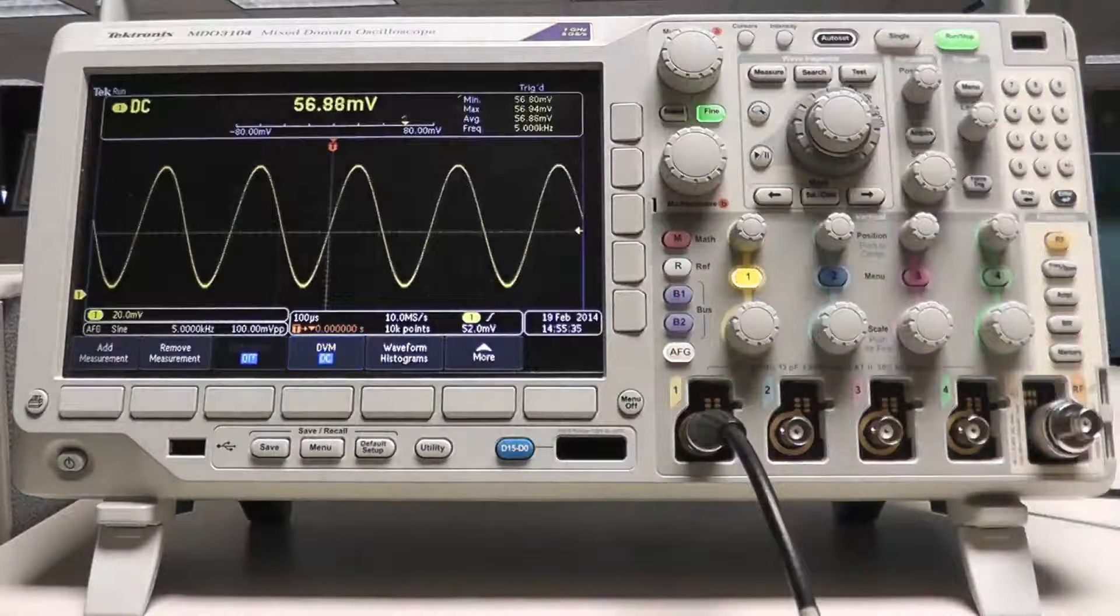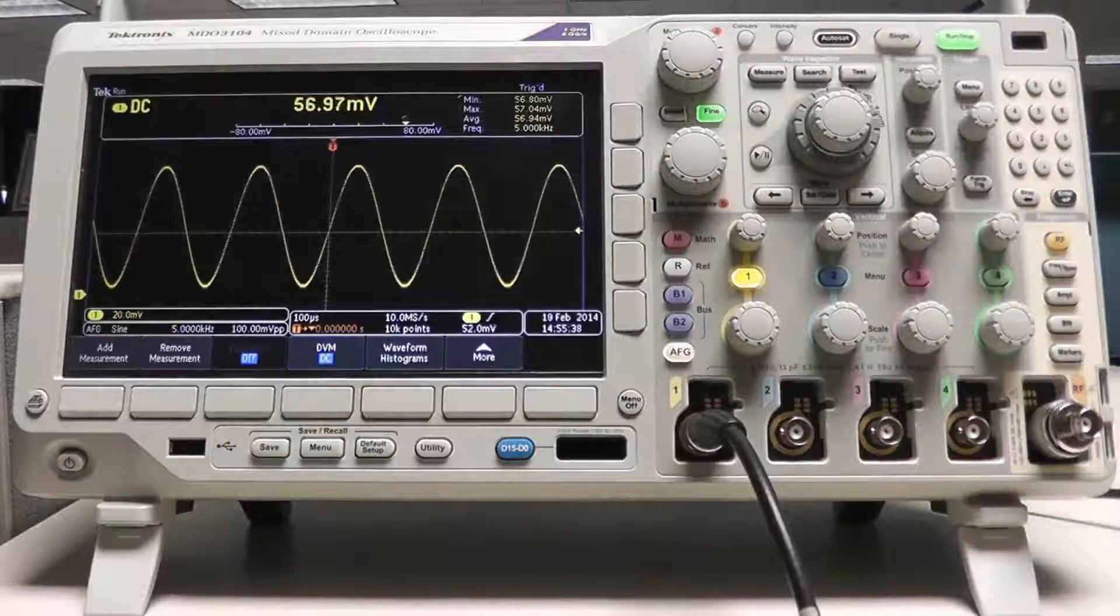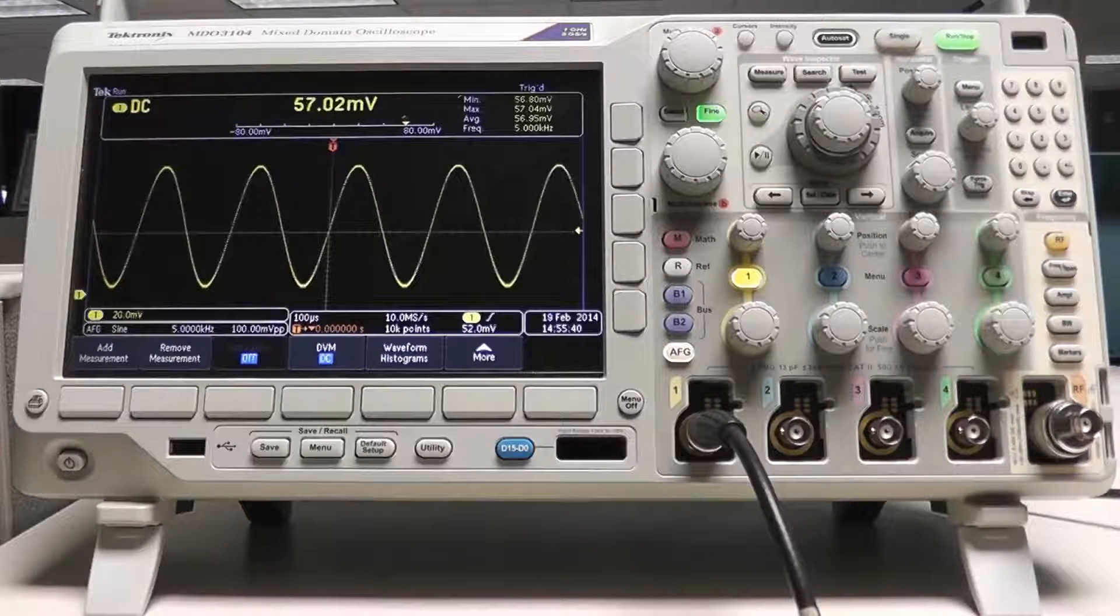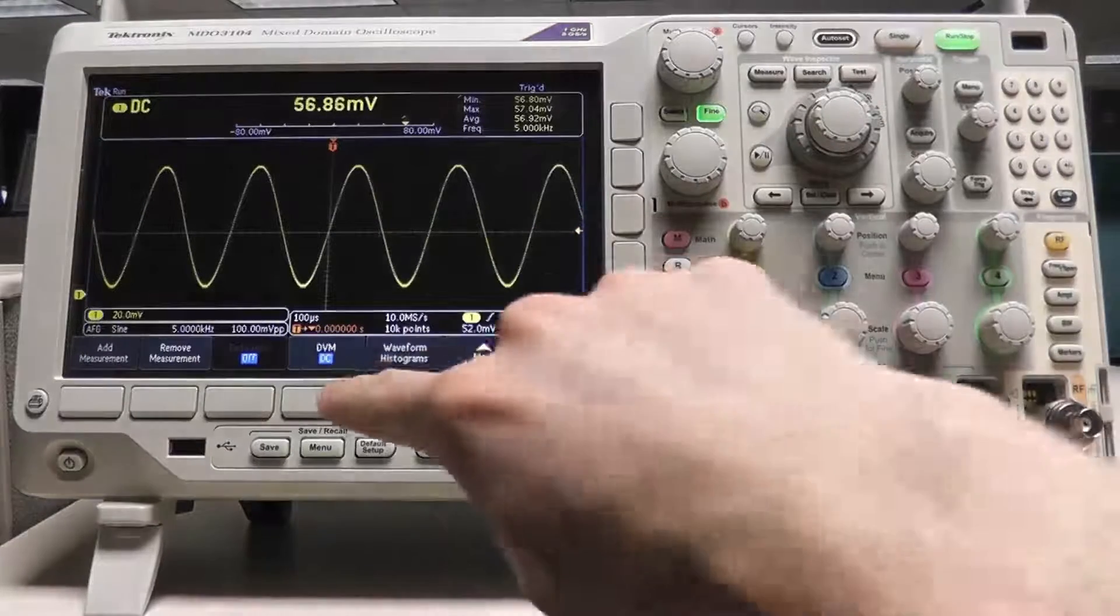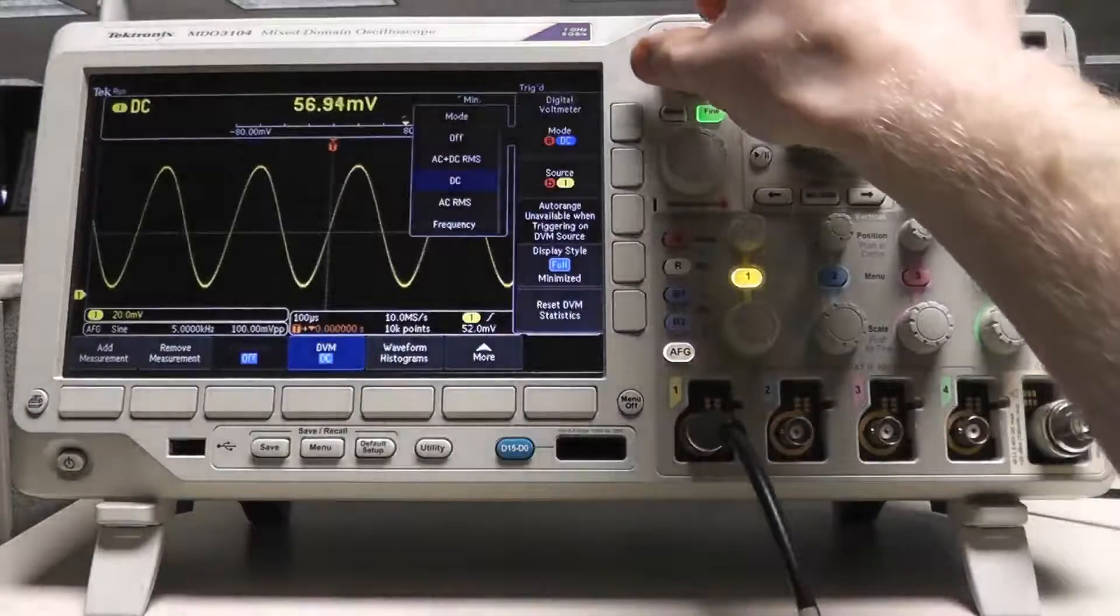Similarly, to measure the DC level of the signal, simply scroll to the DC option in the menu. Here we measure exactly only the DC component, or offset, of the signal.